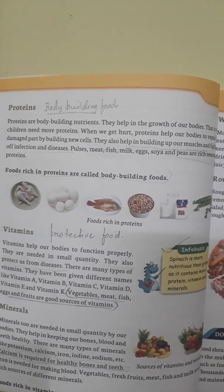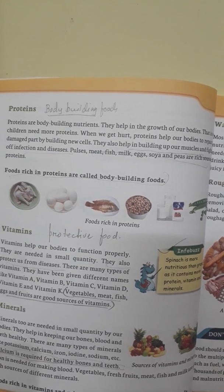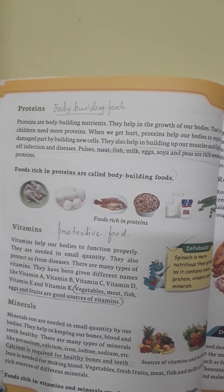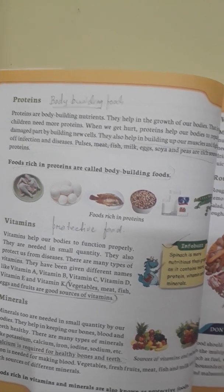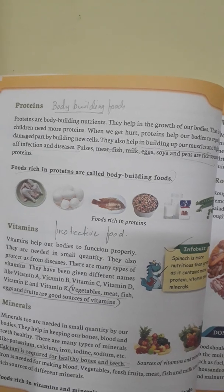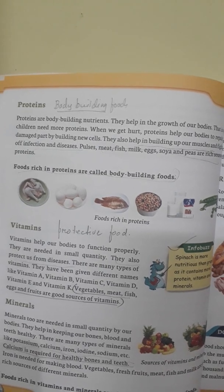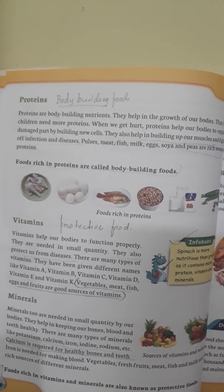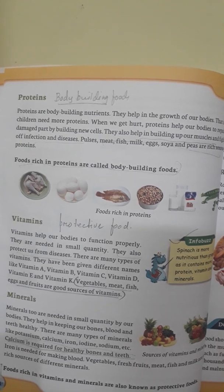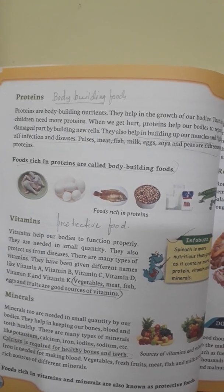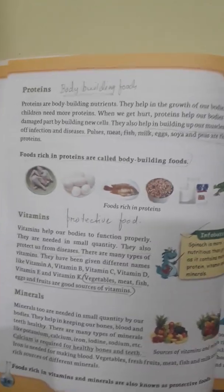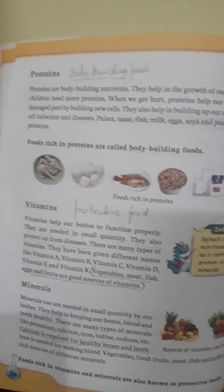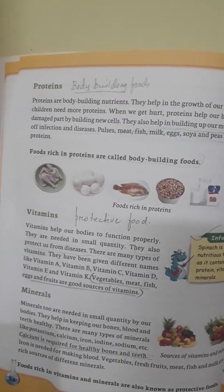Pulses, meat, fish, milk, eggs, soya and peas are rich sources of protein. Foods rich in proteins are called body-building foods.